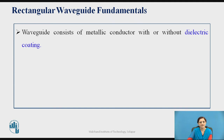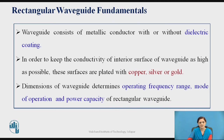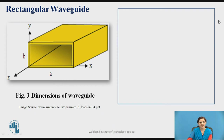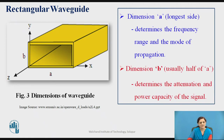Some waveguide fundamentals: a waveguide consists of a metallic conductor with or without dielectric coating. In order to keep the conductivity of the interior surface as high as possible, these surfaces are coated with copper, silver, or gold. The dimension of the waveguide determines the operating frequency range, mode of operation, and power capacity. Dimension A, the longest side, determines the frequency range and mode of propagation, while dimension B — usually half of A — determines the attenuation and power capacity.